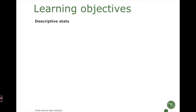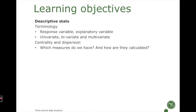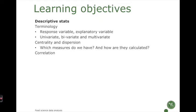The learning objectives for this are: knowing the terminology for what we do descriptive statistics on — that is, what a response variable is and what an explanatory variable is; knowing what univariate, bivariate, and multivariate data is; knowing the two main concepts in descriptive statistics which are centrality and dispersion; and briefly touching upon correlation between variables when we have more than two variables.